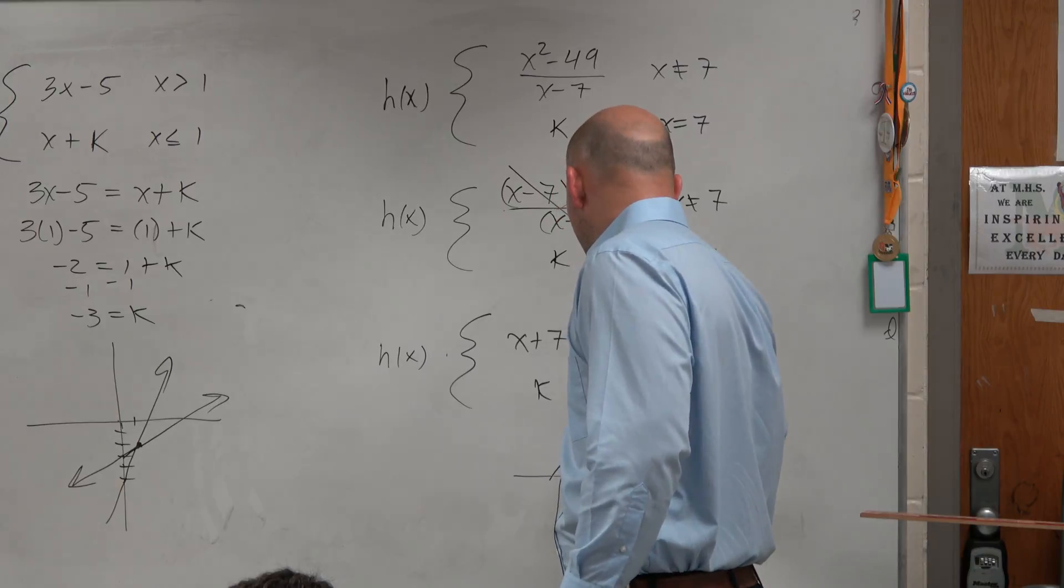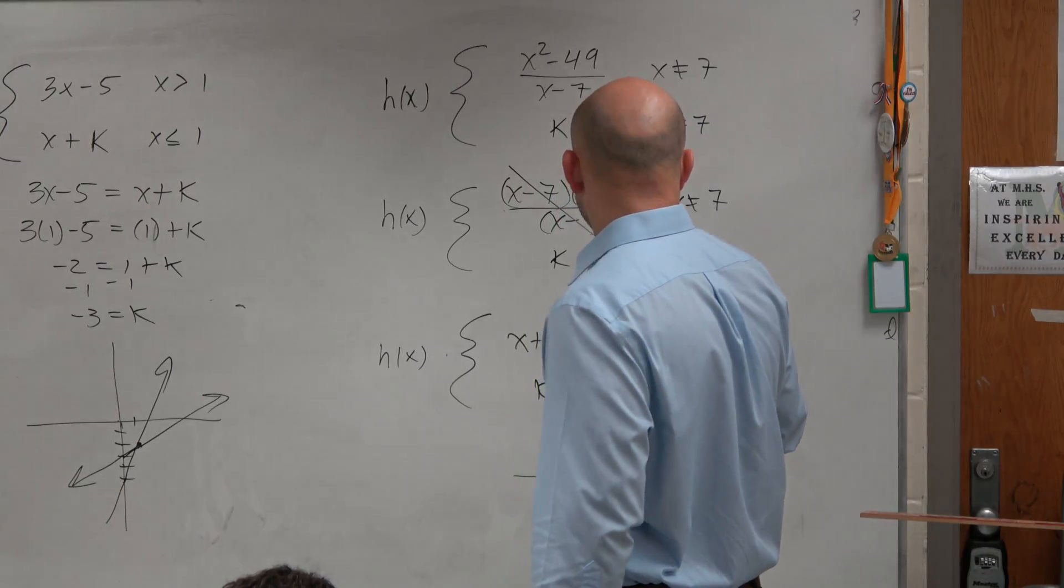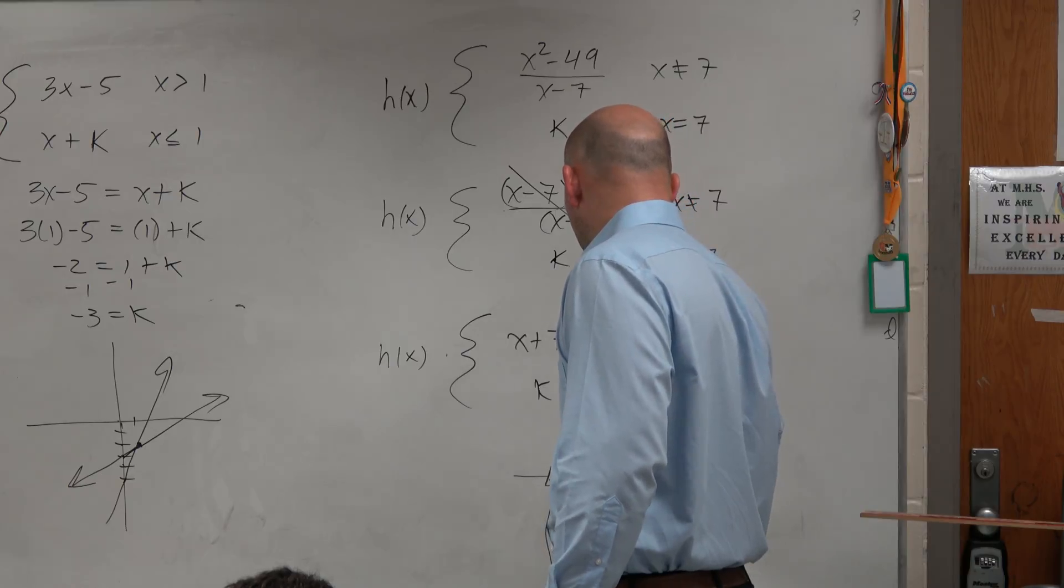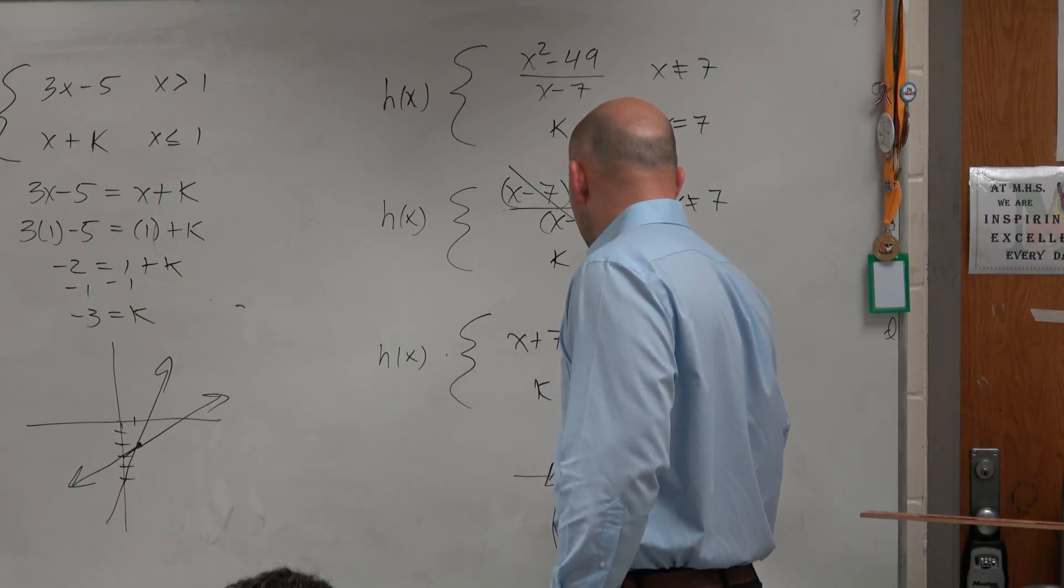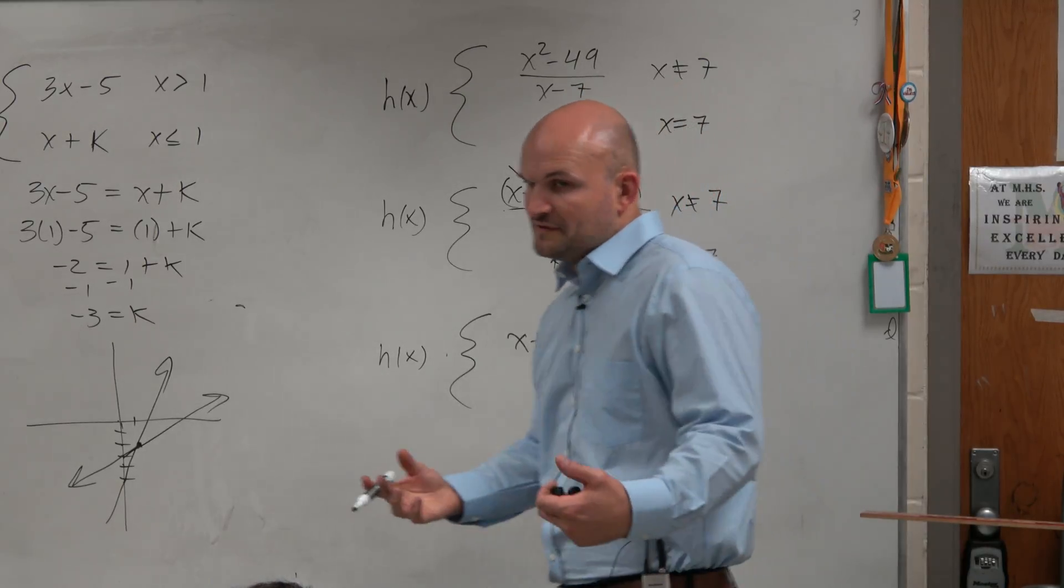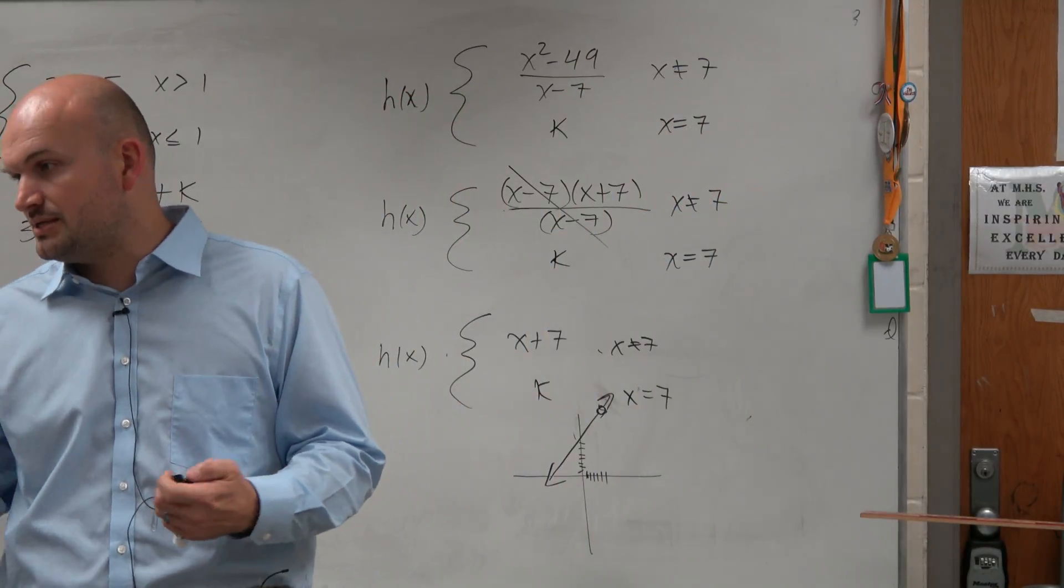All it is is a line where x cannot equal 7, with a hole at 7. If you guys graph this using a graphing calculator, you will see it's just a line with a hole. The graphing calculator is not going to show you the hole, but that's what it is.